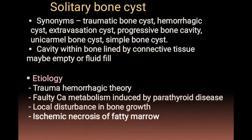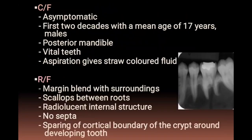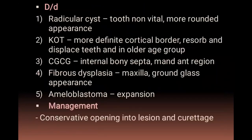The solitary bone cyst, also known as traumatic bone cyst or hemorrhagic cyst, is caused by trauma, faulty calcium metabolism, local disturbance, or ischemic necrosis of fatty marrow. It is asymptomatic, seen in the first two decades of life in males, and commonly located in the posterior mandible. The teeth are vital; aspiration yields straw-colored fluid. Radiographic features show margins blending with surroundings and scalloping between the roots with a radiolucent internal structure without any septa. Differential diagnosis includes radicular cyst, central giant cell granuloma, fibrous dysplasia, and ameloblastoma.